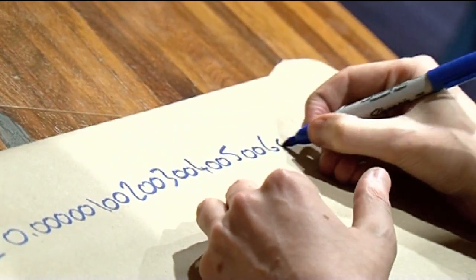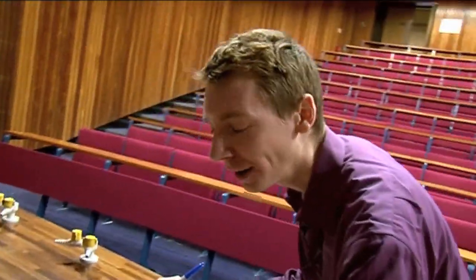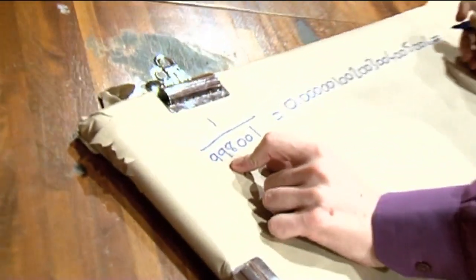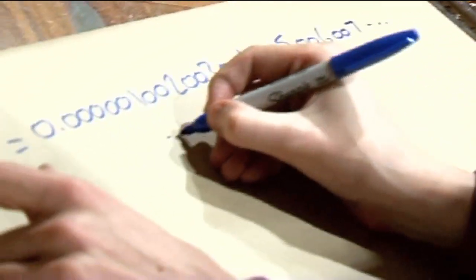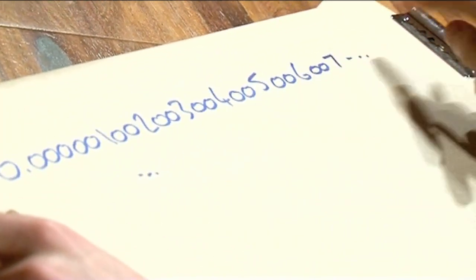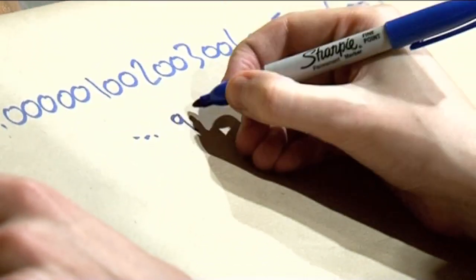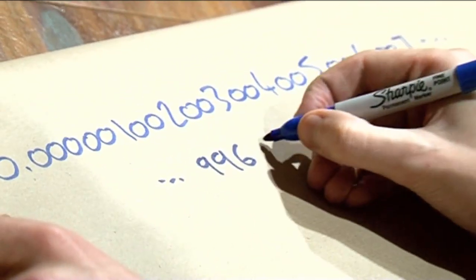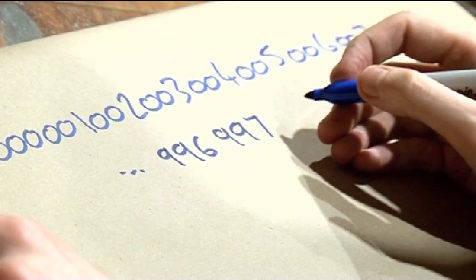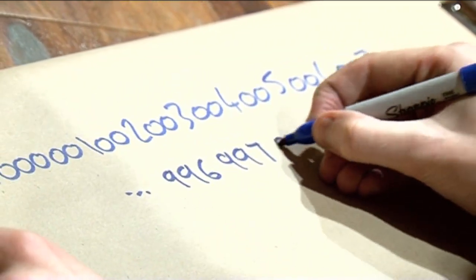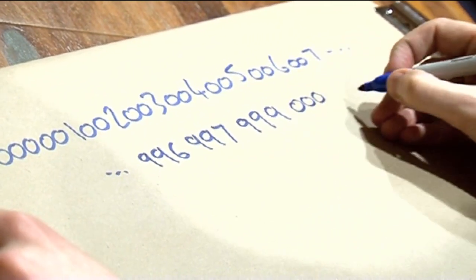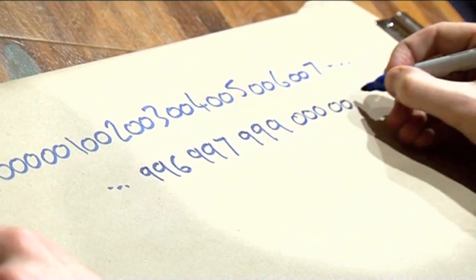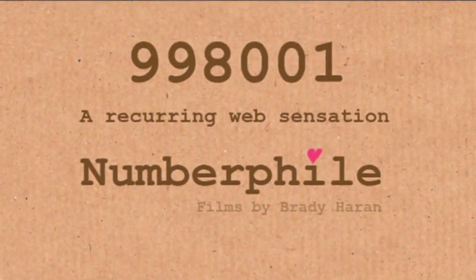It gives you every single three-digit number except for one — it doesn't give you 998. Every single three-digit number except 998. So it goes 996, 997, there is no 998, then it goes 999, and then it starts again back to 000, 001, and it repeats.